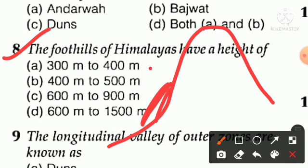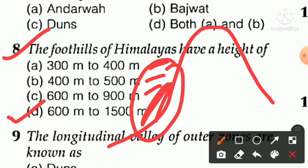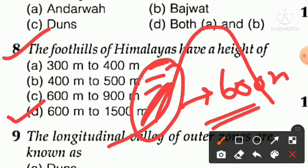The next question asks about the height. Option A is 300 to 400 meters, option B is 400 to 500 meters, option C is 600 to 900 meters, and option D is 600 to 1500 meters. Option D is right — the foothills of the Himalayas range in height from 600 meters to 1500 meters. You have to remember this.